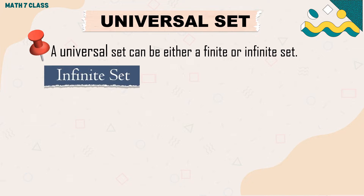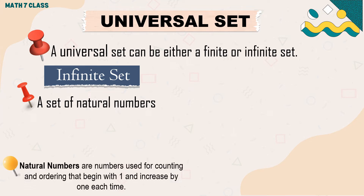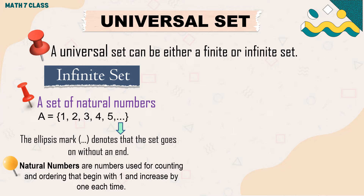A universal set can be either a finite or infinite set. This is an example of an infinite set: a set of natural numbers. Natural numbers are numbers used for counting and ordering that begin with 1 and increase by 1 each time. If set A is a set of natural numbers, then the elements of set A are 1, 2, 3, 4, 5, and so on. This ellipsis mark denotes that the set goes on without an end.